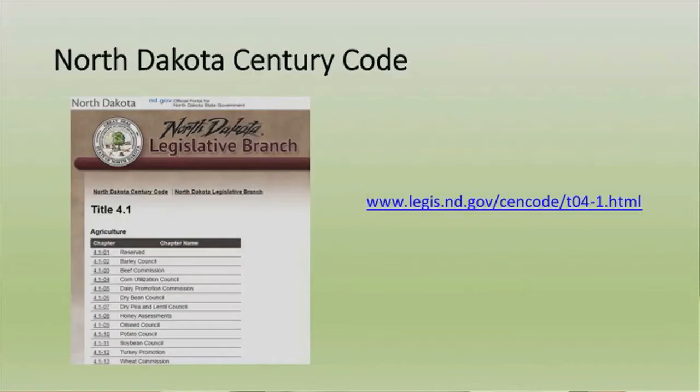So why is NDSU Extension involved in these elections? The NDSU Extension Service is required by the North Dakota Century Code to conduct elections for the North Dakota Barley Council, Corn Council, Dry Pea and Lentil Council, Oil Seed Council, Soybean Council, and the Wheat Commission. Each commodity requires an election to be held in each county for the county representative positions. The elections are based on a three- or four-year rotation depending on the commodity.